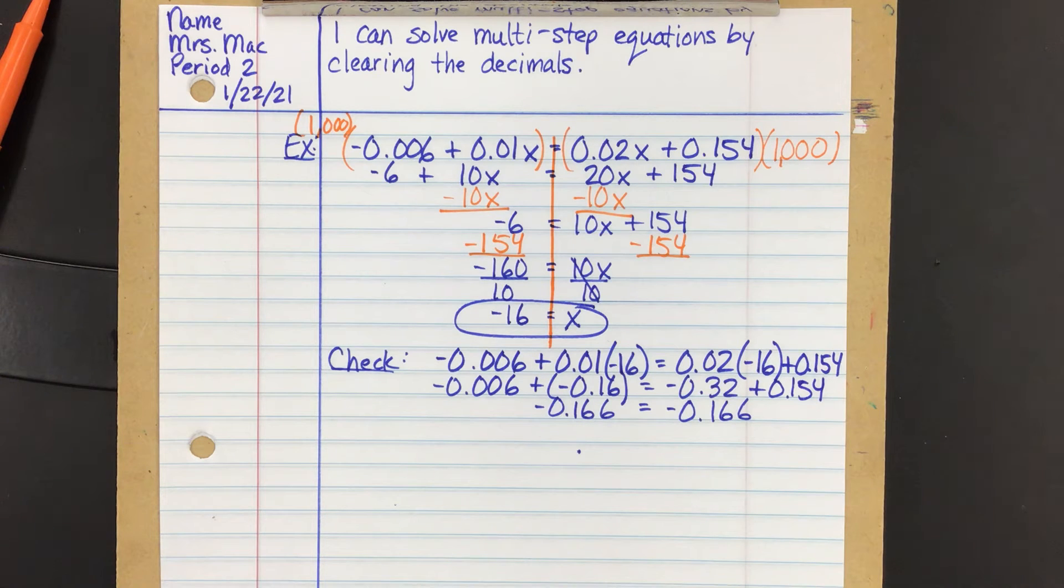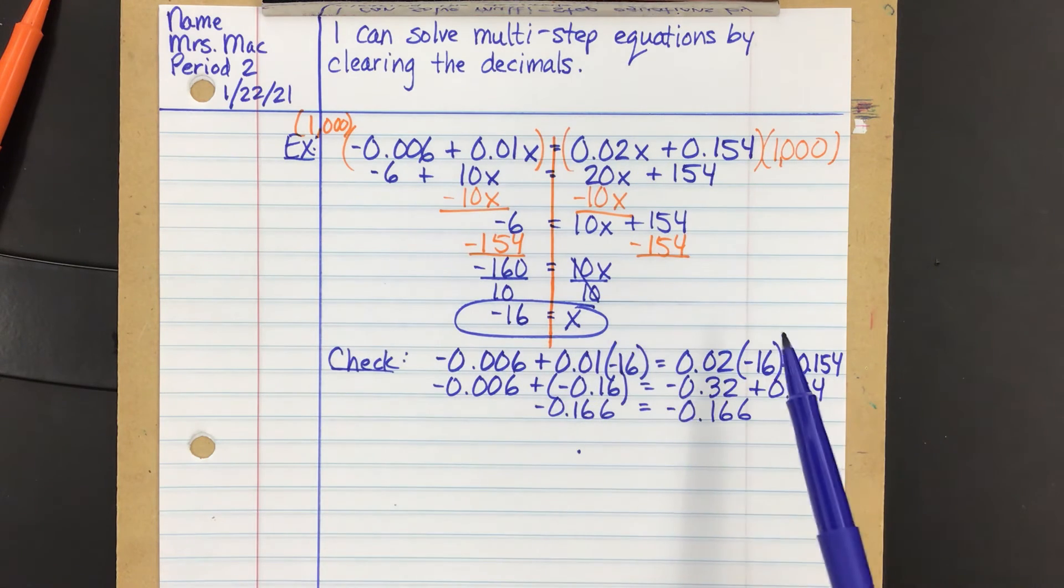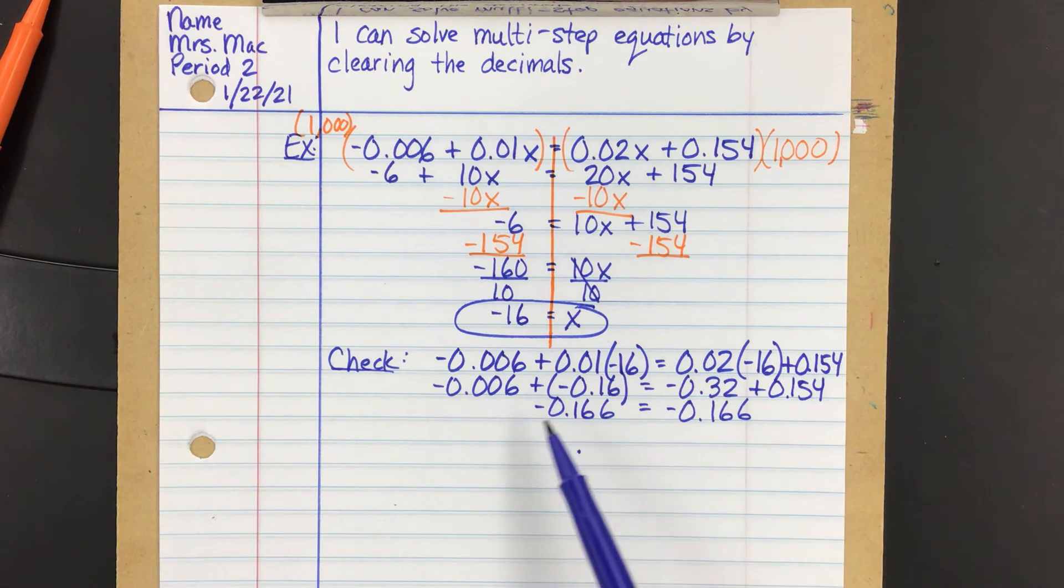Okay. Don't you have to, like, divide the negative 16 by like 1,000 because you multiply it by 1,000? Or do you already do it? Let's see. What part here? Because you said, like, negative 16 equals x. But like, wouldn't you have to, like, divide by 1,000 because you multiply it by 1,000 at the beginning? No, because I did it to both sides. So the equation is still balanced.